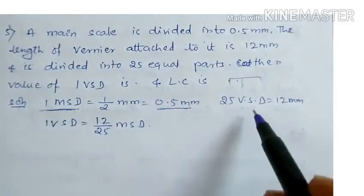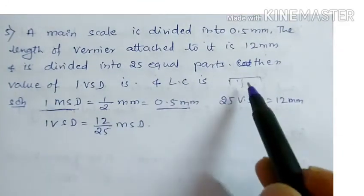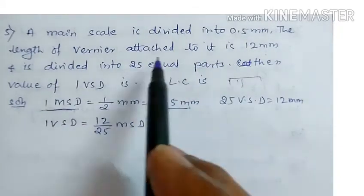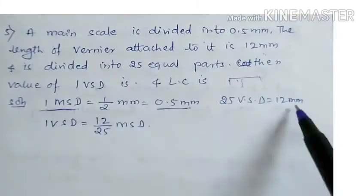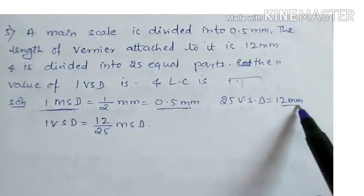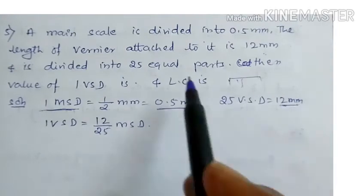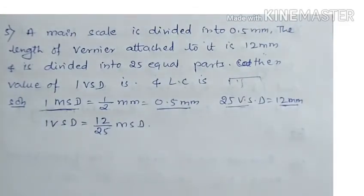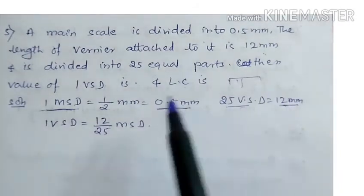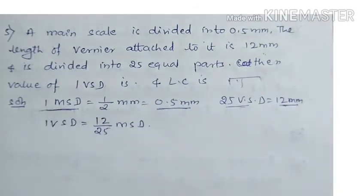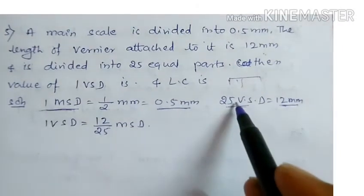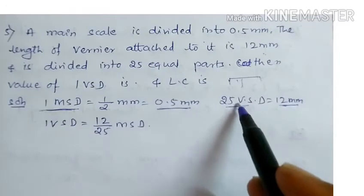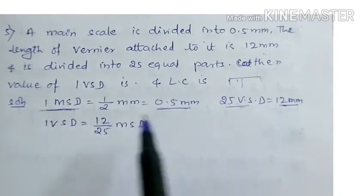Now, 25 vernier scale divisions. Just check here. The length of the vernier attached to it is 12 mm. Vernier length is 12 mm. It is divided into 25 equal parts. Then the value of 1 VSD is what?